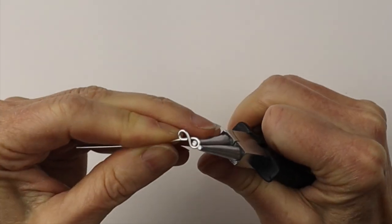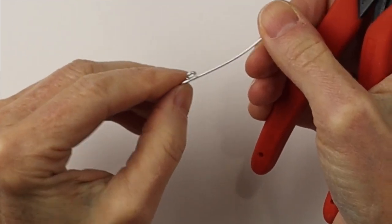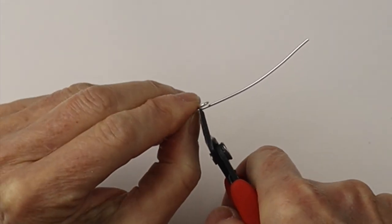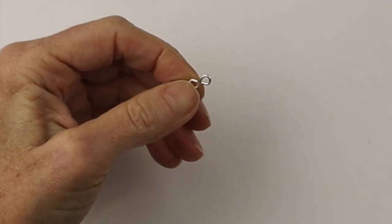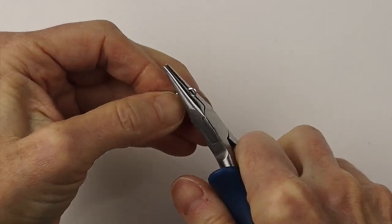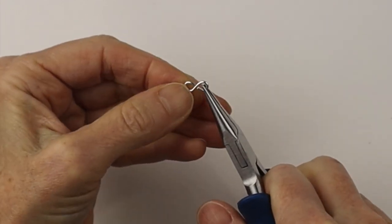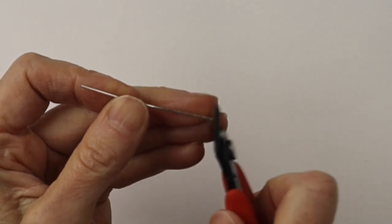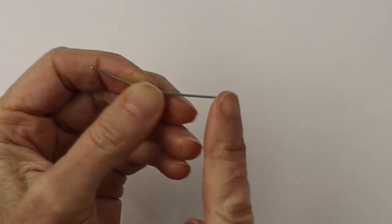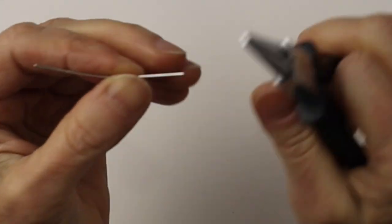You can adjust it a bit if you need and then cut that little end flush. So once you've cut it you're going to pinch it with the flat pliers so the ends are together and then you can go right ahead and cut the end flush.